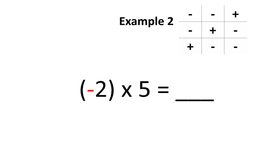In our second example, we want to find what negative 2 times positive 5 is equal to. You'll notice a pair of brackets around the negative 2. Sometimes you'll see brackets around negative numbers, sometimes you won't. Let's use our shortcut here. A negative number multiplied by a positive number should give you a negative number. Therefore, negative 2 times positive 5 is negative 10.